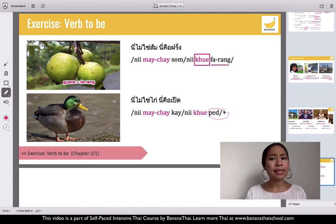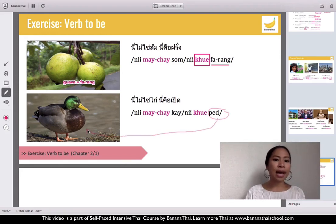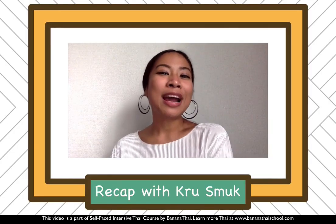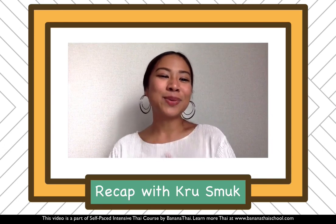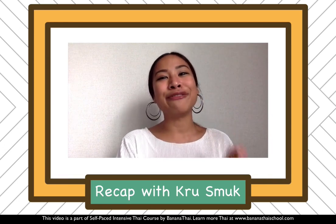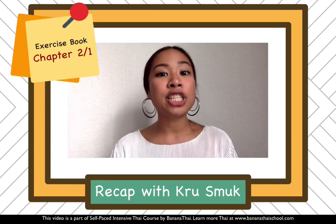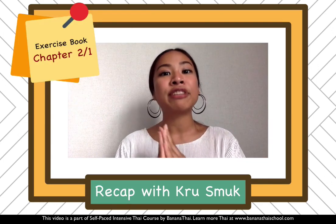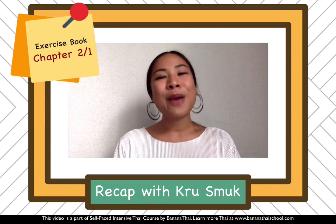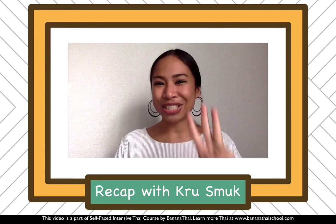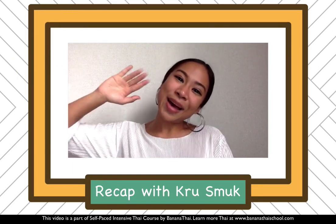So ni koo pet — this is a duck, not a chicken. After this, please go to your exercise book and do the exercise for verb to be, Chapter 2 slash 1. After you finish and understand everything clearly, come back to see me in Chapter 2 slash 3. See you later, bye!